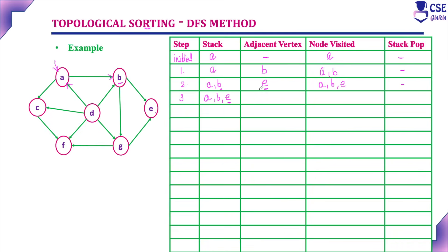Adjacent vertex to B is E. Push E into the stack and consider its adjacent vertices. There is no unvisited adjacent vertex to E. Since E has no adjacent unvisited vertex, it has reached a dead end. We need to pop E from the stack. The first element popped from the stack is E.